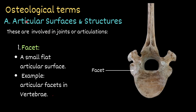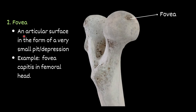Today we will discuss various osteological terms. First, we discuss various articular surfaces and structures; these are involved in joints or articulation. The first term is facet — a small flat articular surface. For example, articular facets in vertebra. You can see this is a vertebra, so you can see these surfaces — these are called facets.